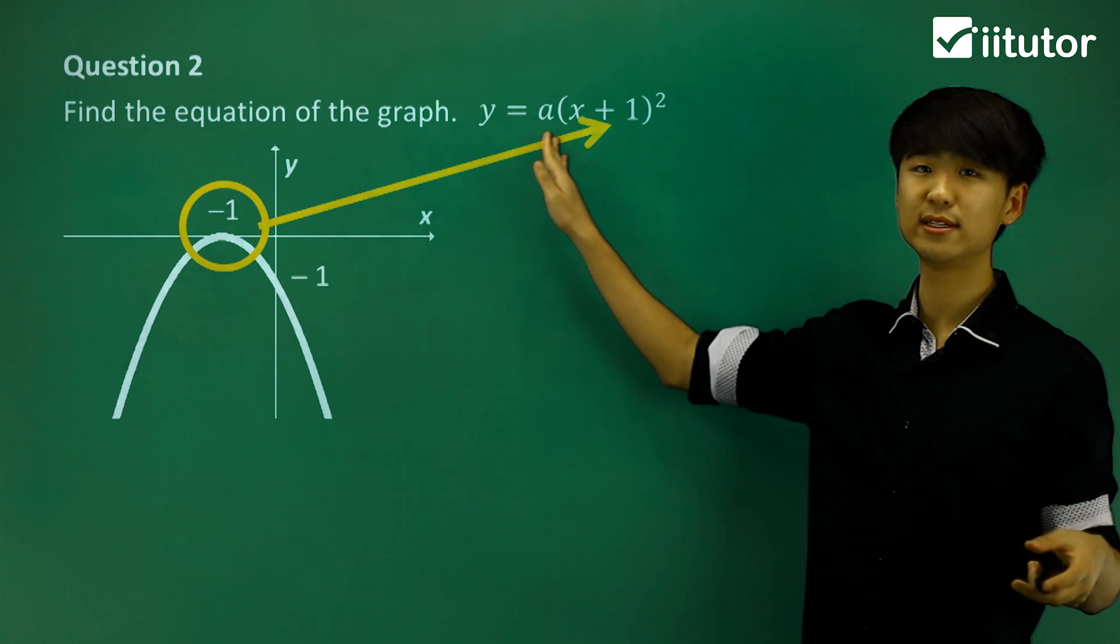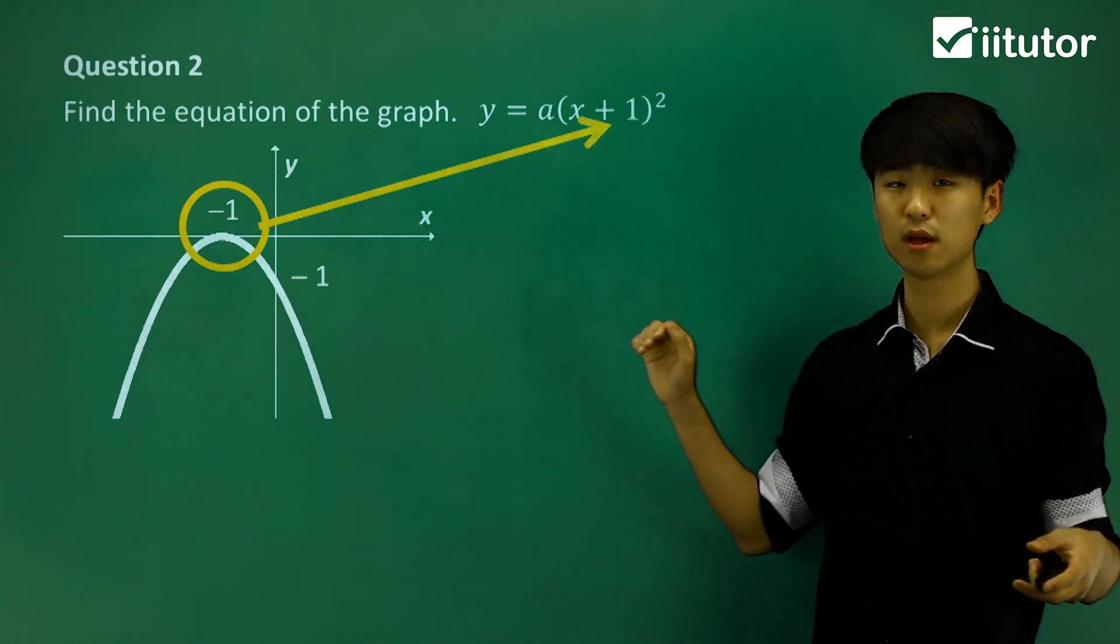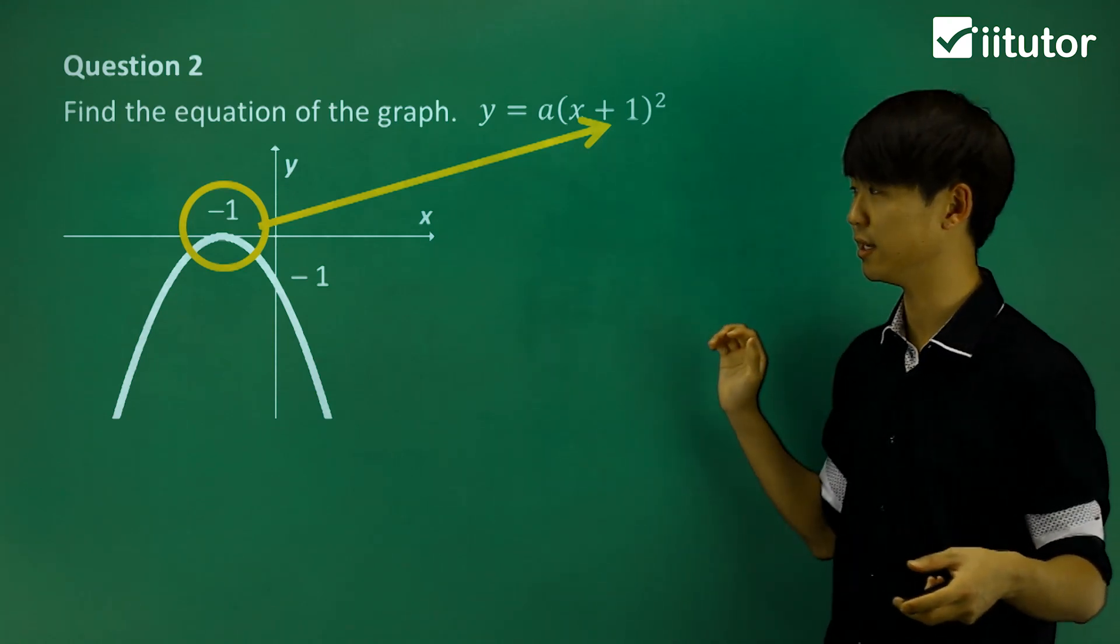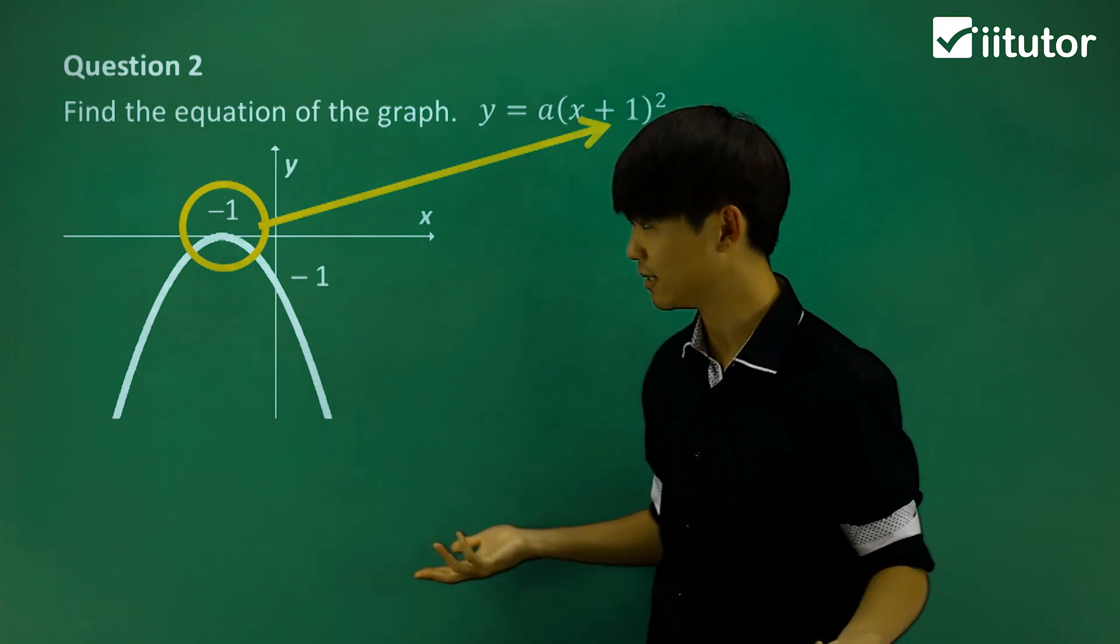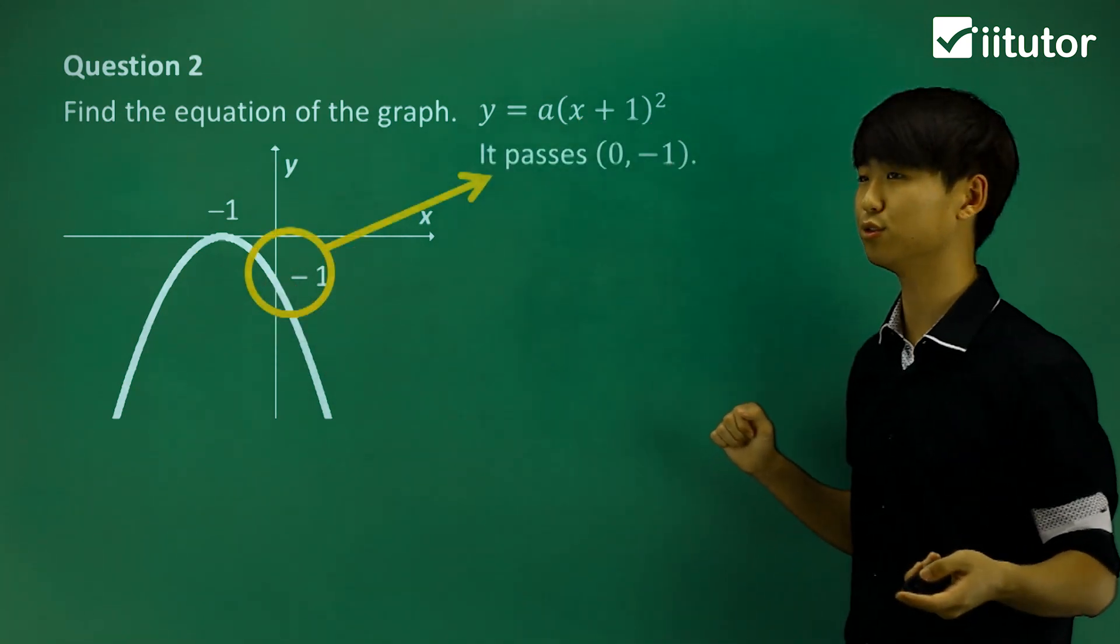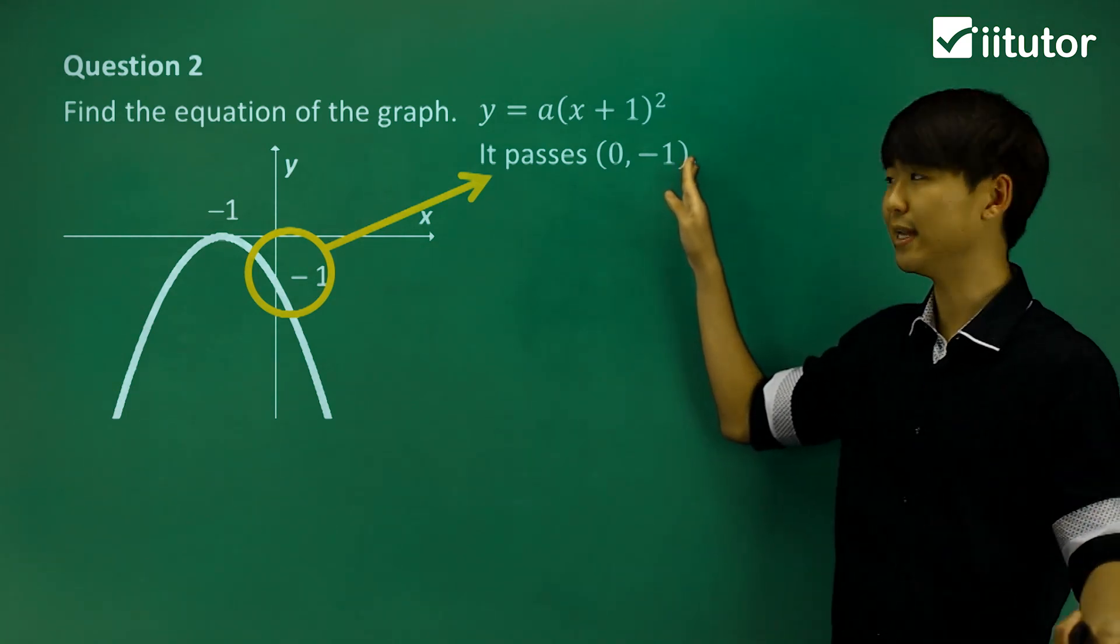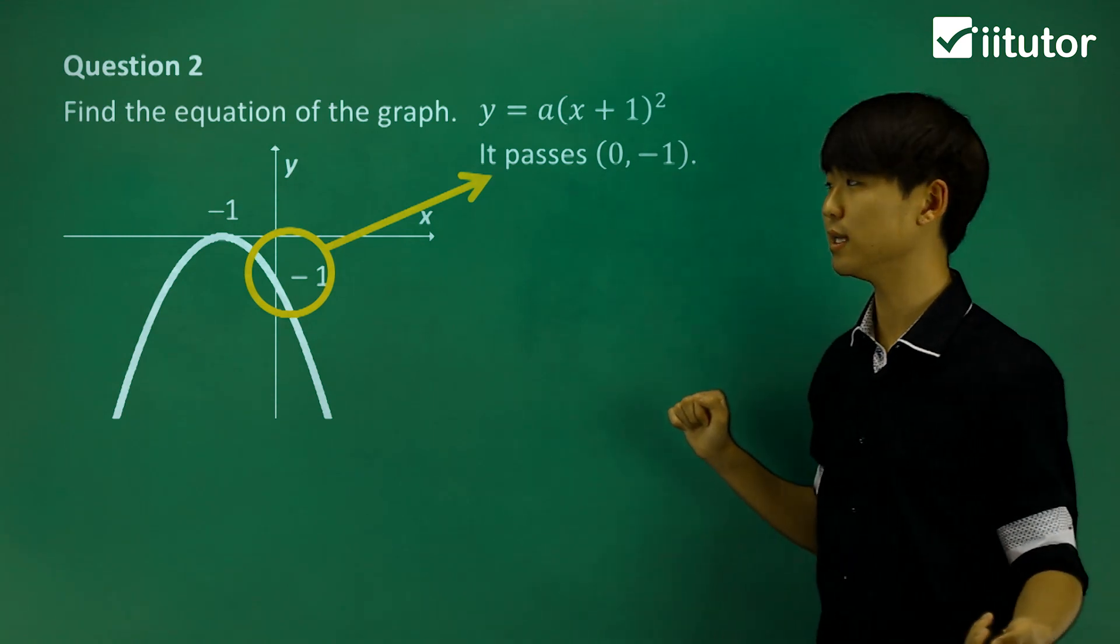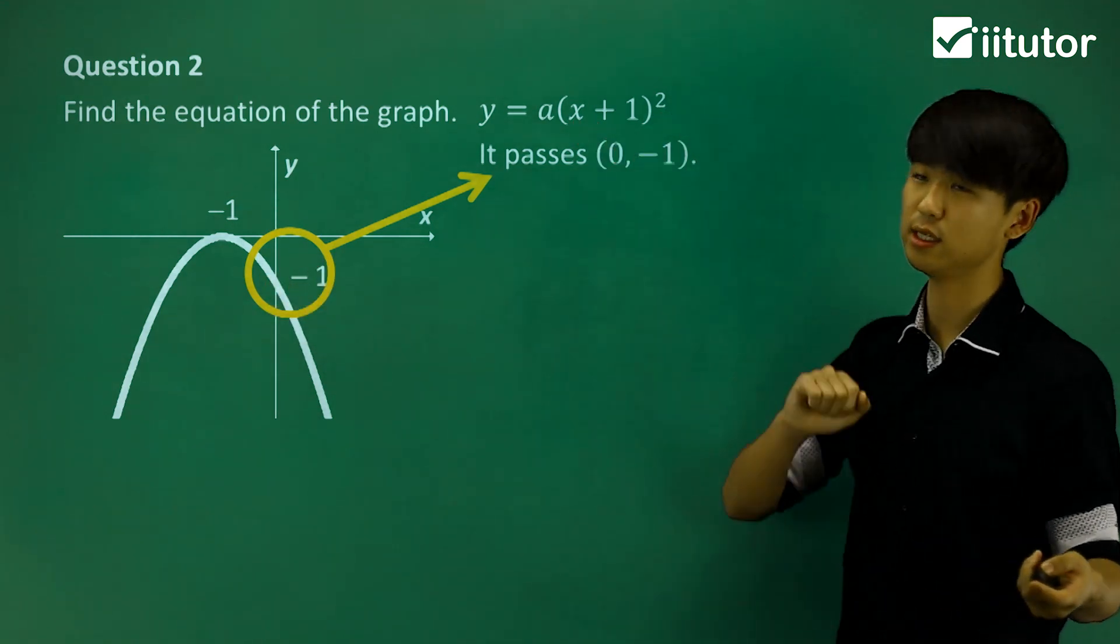But we still have to find this number a at the front. Like I said, we're going to have to find a point that lies on this graph and substitute it in. So what do we know here? Well, we can already see that the y-intercept of this graph is x is equal to 0 and y is equal to negative 1. So the point (0, negative 1). So this point is going through this graph, so let's substitute it into the equation.